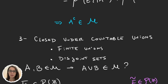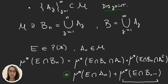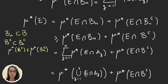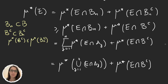This is the proof we did last video about M being a sigma algebra. One of the things we proved is that μ* of E, for some set E in the power set of X, is equal to the sum of μ* of E ∩ A_j for A_j a sequence of disjoint sets, plus μ* of E ∩ B complement, where B is the union up to infinity of those sets A_j. Now I'm going to prove that μ* restricted to M is a measure, starting with this same calculation.